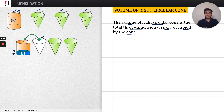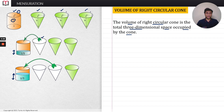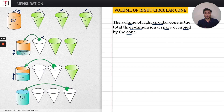Now similarly, if you take the second cone and pour all the water inside it into the cylinder, you can predict it now — yes, the water will get filled exactly by two thirds of the volume of the cylinder. Interesting, right?